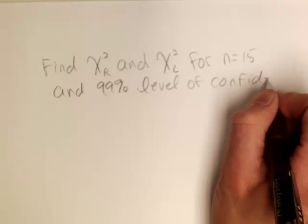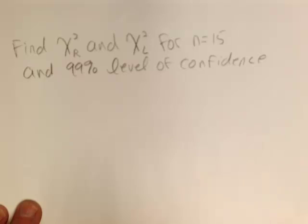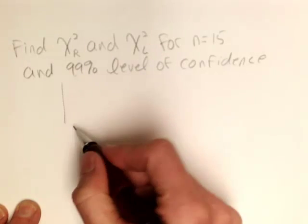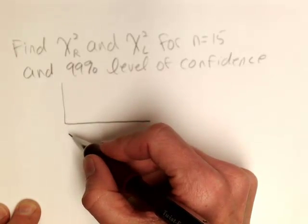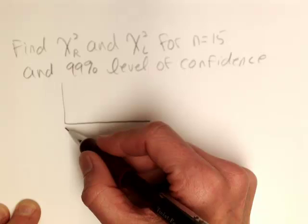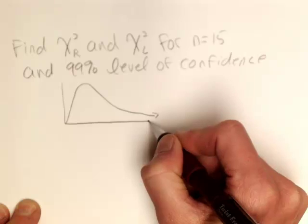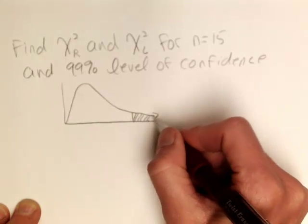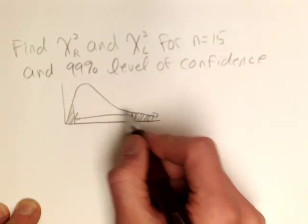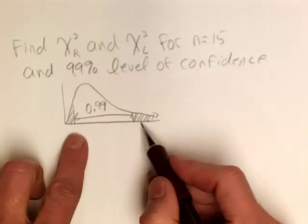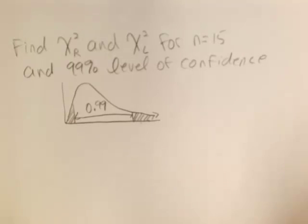What I want to do — and I strongly suggest you do this for every problem you do by hand — is sketch the distribution. This is not a symmetric distribution; it is skewed right, so I'm not going to be drawing a bell curve. I'm going to draw a skewed right distribution and shade two areas, recognizing that I want .99 amount of area between them.